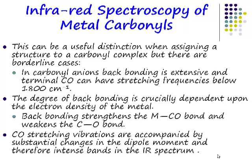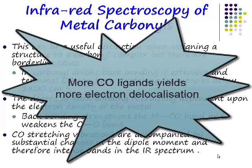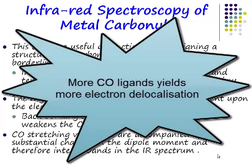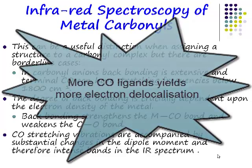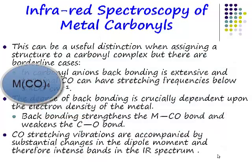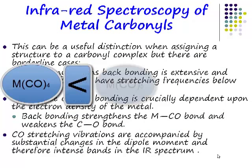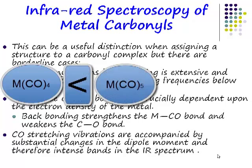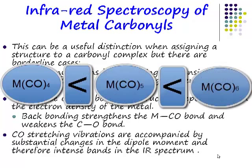Remember: if you have a certain amount of electron density on the transition metal centre, the more CO ligands you have, the more that electron density is shared out. So you expect to see lower frequencies in tetracarbonyl complexes than in pentacarbonyl complexes, and lower in pentacarbonyl than in hexacarbonyl complexes — because the same electron density is shared among different numbers of CO ligands.